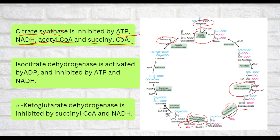Acetyl-CoA combines with oxaloacetate to form citrate first. So if citrate is already being produced, Acetyl-CoA inhibits citrate synthase — this is a feedback inhibition. If citrate is accumulating, further production would be a waste of energy, so it is inhibited. Similarly, Succinyl-CoA also inhibits citrate synthase.